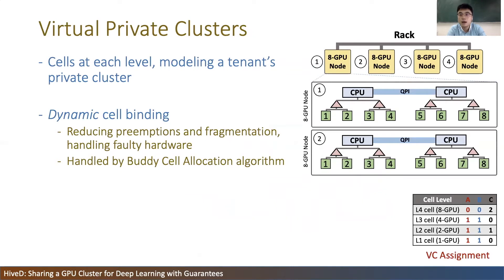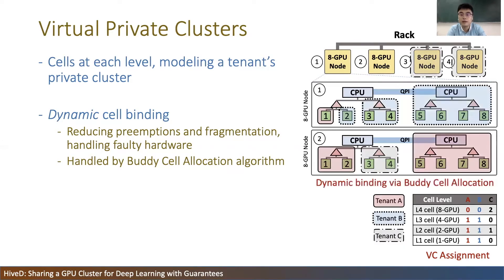With the concept of cells, a tenant's VC is assigned a set of cells at each level to model its own private cluster. HIVED requires this cell assignment to be feasible — the physical cluster should be able to accommodate all the assigned cells. In this figure, we have three tenants A, B, and C. For example, A's VC has one level-1, one level-2, and one level-3 cell. HIVED will bind the cells to the physical cluster when tenants use them. This is not the only possible binding — HIVED adopts a dynamic binding approach for flexibility to reduce preemptions of low-priority jobs, reduce GPU fragmentation, and handle faulty hardware.